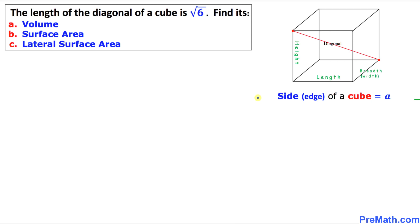Welcome to pre-math. In this video tutorial we have been given the length of the diagonal of this cube as square root of 6. We are asked to find the volume, surface area, and the lateral surface area of this cube.